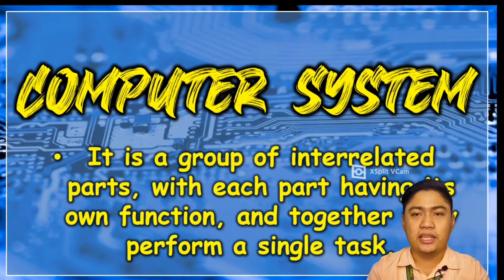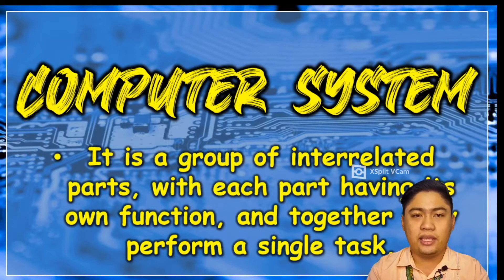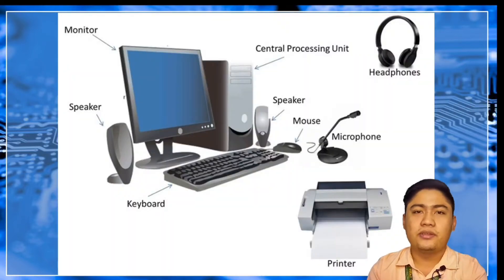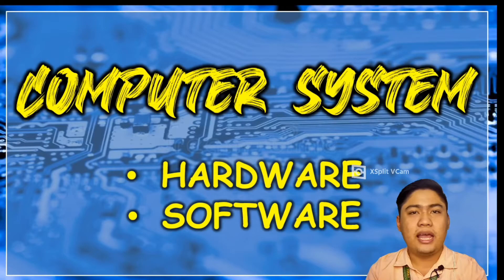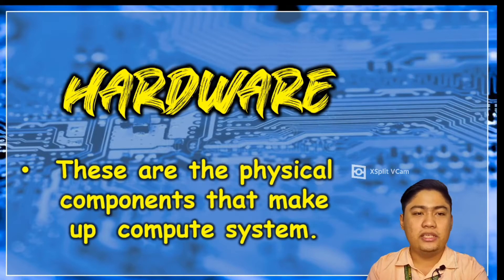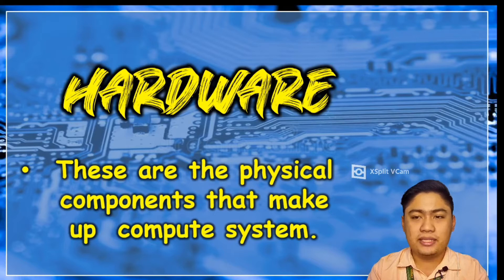The objective of a computer system is to produce timely and accurate information. This is an example of a computer system. Basically we have two types of computer system: we have the hardware and software. Let's have first the definition of hardware. Hardware are the physical components that make up a computer system.